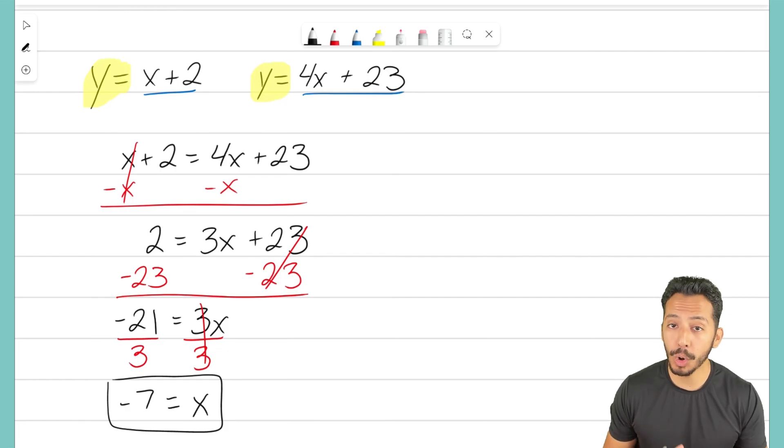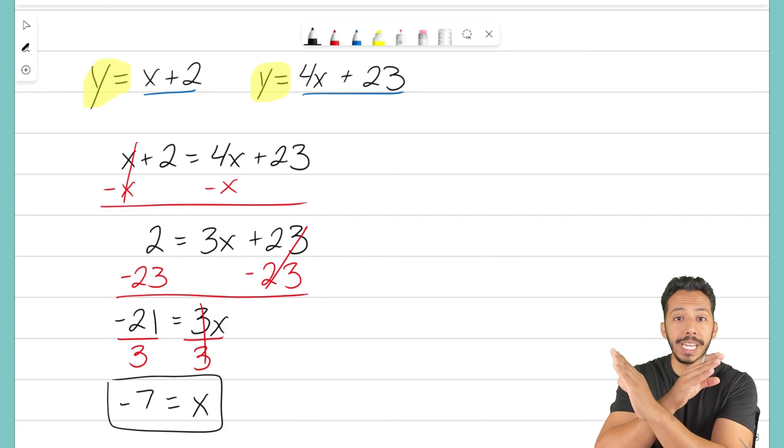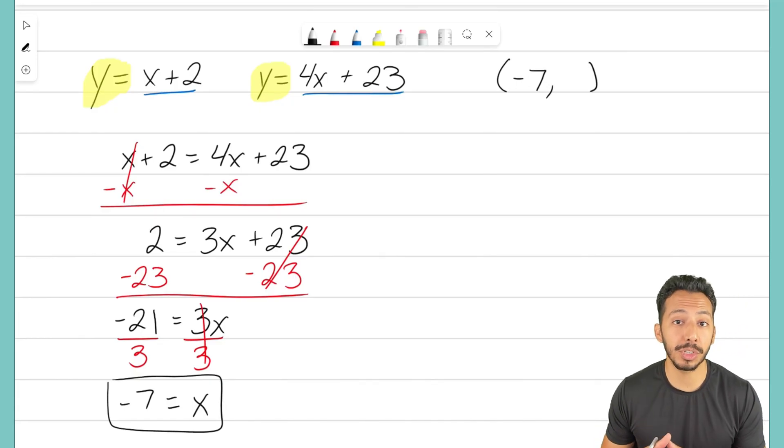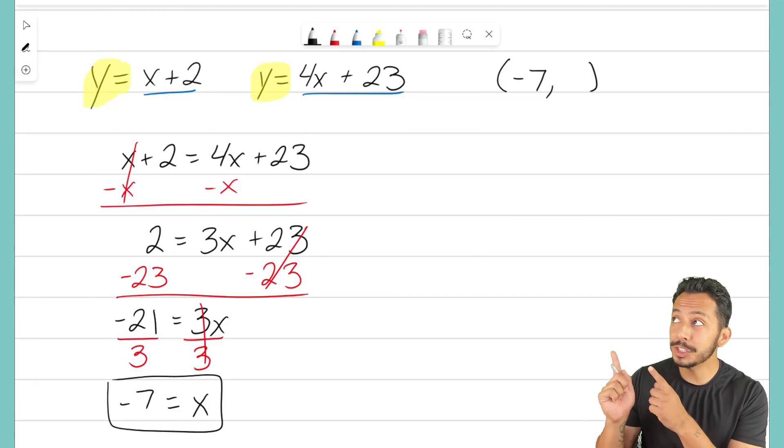We're trying to find a point, remember? Our goal here is to find the point where those lines intersect. That is a coordinate point. I now know that it's going to be the x term will be negative 7. All I have to do now is find that missing y term. And here's the point where you get to choose which equation we use. Because we have two up there.